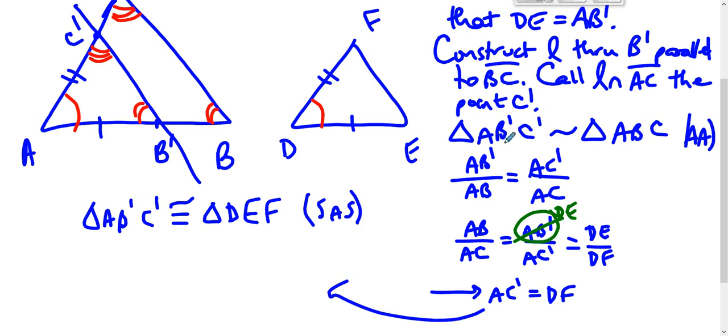And what does that mean? So triangle ABC is similar to triangle AB prime C prime, and triangle AB prime C prime is congruent to triangle DEF. So triangle ABC must be similar to triangle DEF, as needed.